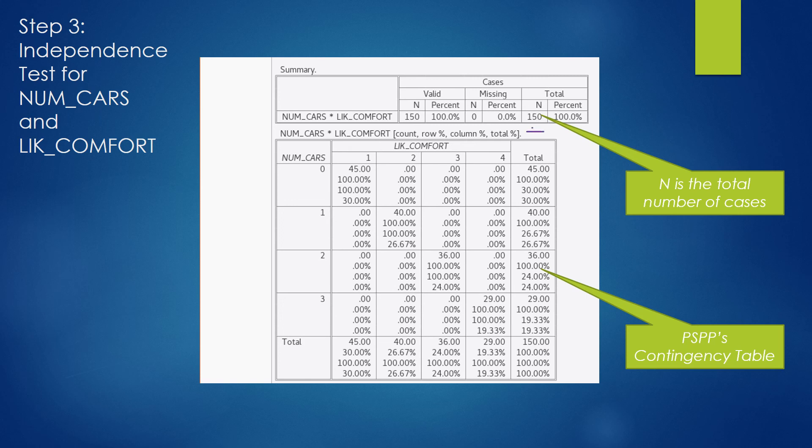The computer tells you what to expect right here in each cell. The first number is the count. So for people who reported no car payments but a comfort scale of one, there was 45 of them. The second number indicates the percentage of these people of how much they represent in that row. In this case, the number is telling you that 100% of people with no car payments appeared in this column. If you look, there's no one here, or here, or here. So in this row, all 45 represent 100% of the people who are in this row.